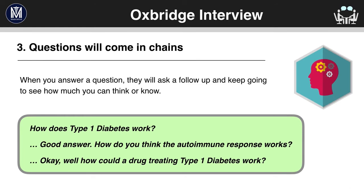Three: questions will come in chains. When you answer a question, they will likely ask a follow-up and keep going to see how much you know. For example, for the previous question about how type 1 diabetes works, they could follow up by saying, 'Good answer — how do you think the autoimmune response works?' And then: 'How could a drug treating type 1 diabetes work?' And so on.